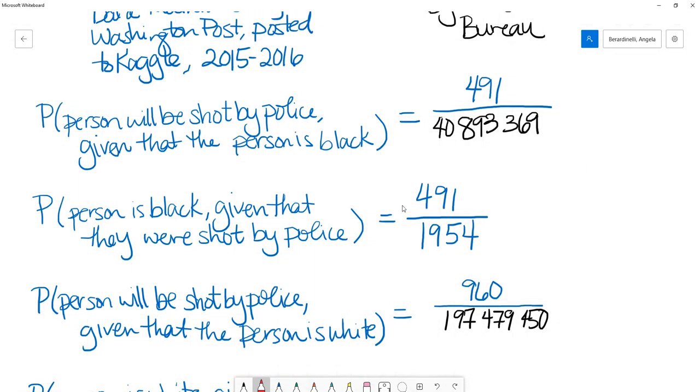The first set of numbers shows what we computed in the previous video and what we really should have computed. So the way we read the original statistic that was supposed to be computed, or the original probability, was that we wanted to know the probability a black person would be shot by police. And if you dig a little bit deeper into probability theory, this is conditional probability.